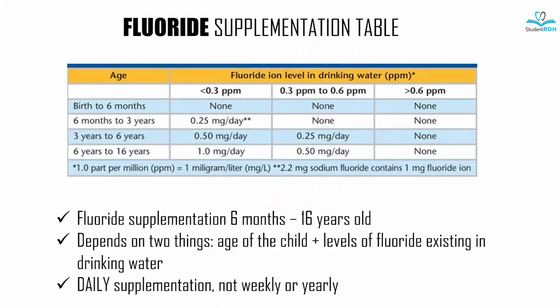Let's look at the table — you have probably seen this before. This is the table of fluoride supplementation, which shows how much you can give daily to supplement the fluoride level in their drinking water. This applies only to children who are 6 months to 16 years old. There are two things to consider: the age and the level of fluoride that exists in their drinking water already. This is about daily supplementation, not weekly or yearly.